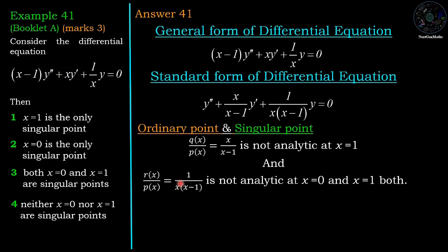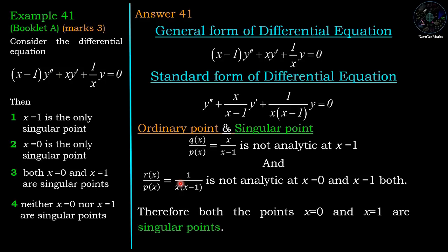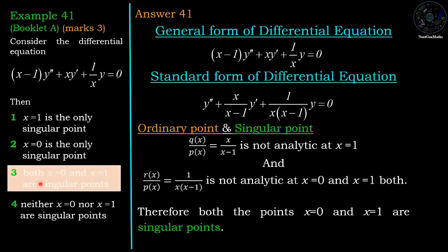Therefore the ODE has two singular points: x = 0 and x = 1, which corresponds to option 3. Therefore the third option — both x = 0 and x = 1 are singular points — is correct.